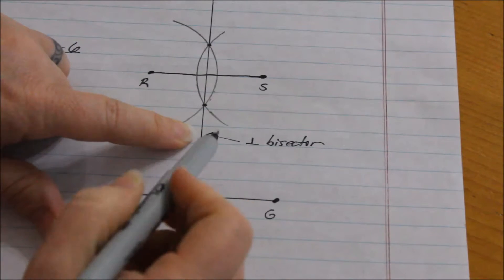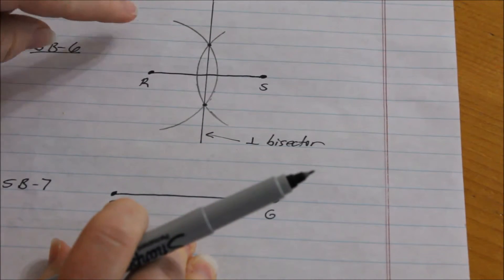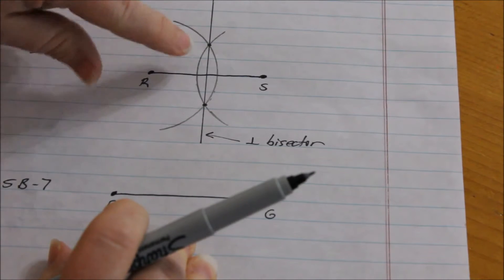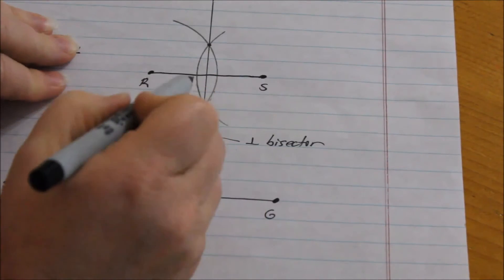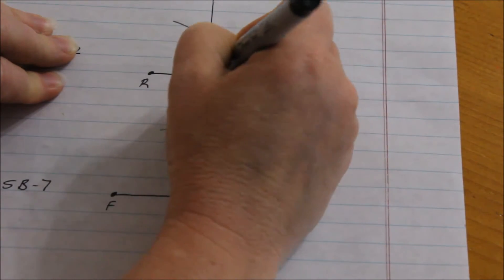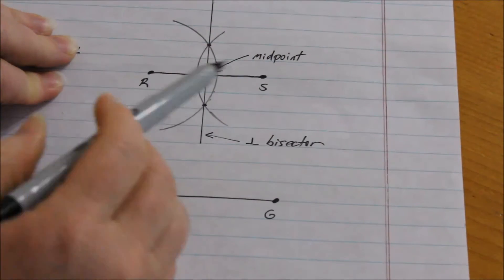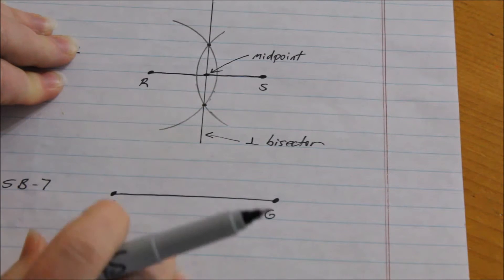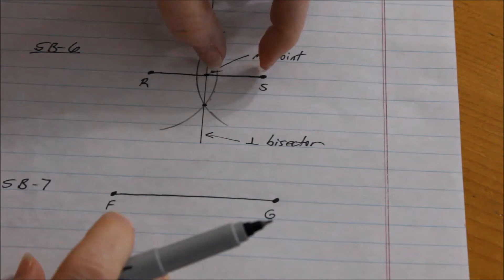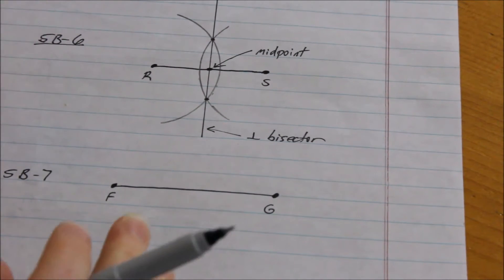The line I draw connecting those arc intersections becomes my perpendicular bisector. This means that this line is perpendicular to my line segment and has also bisected it. Where the perpendicular bisector intersects line segment RS, that point is my midpoint. I can take a ruler and measure each half of the line segment — they should be the same distance.